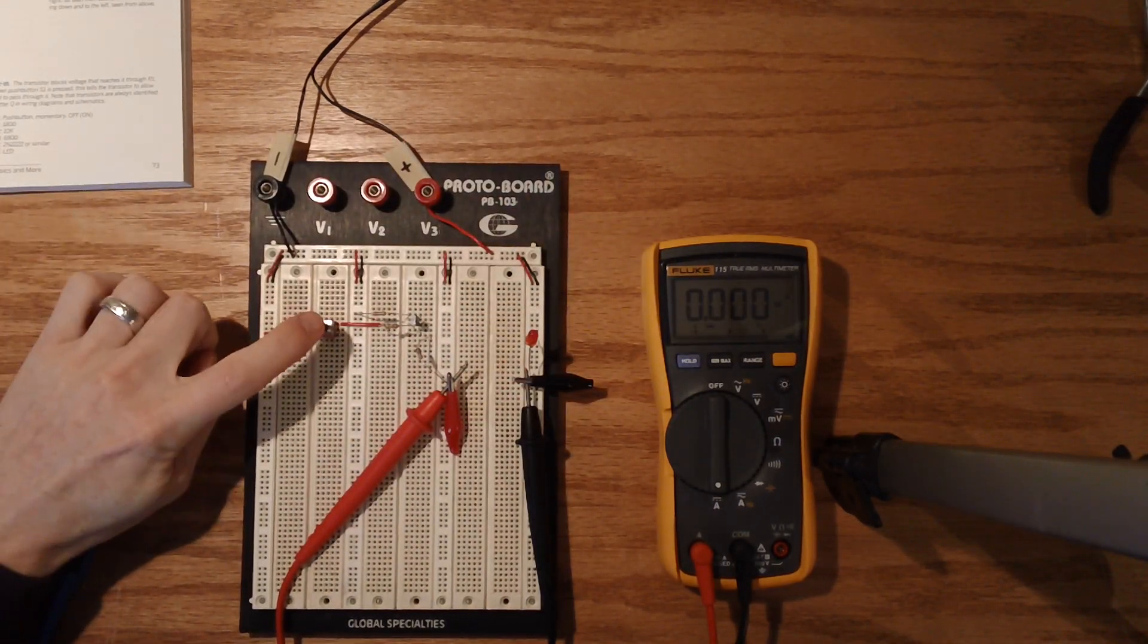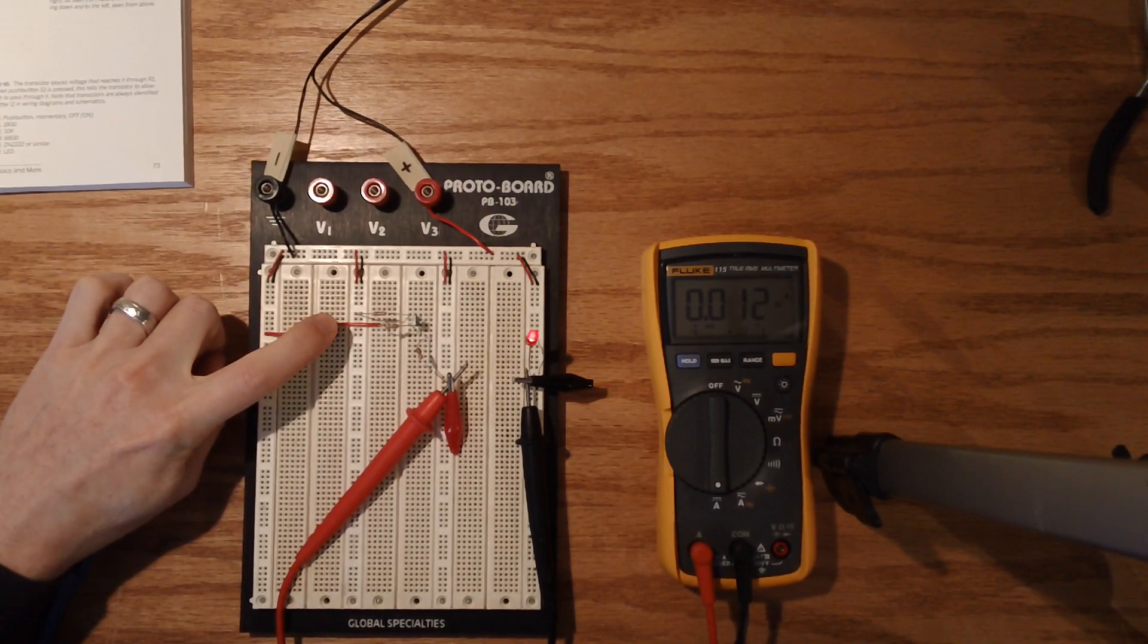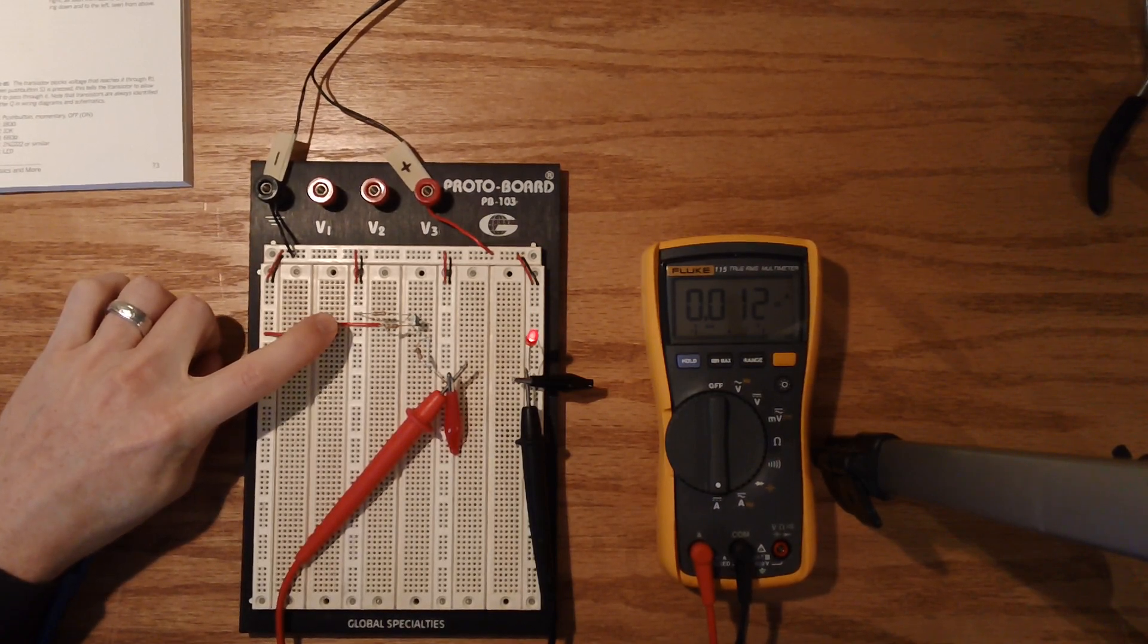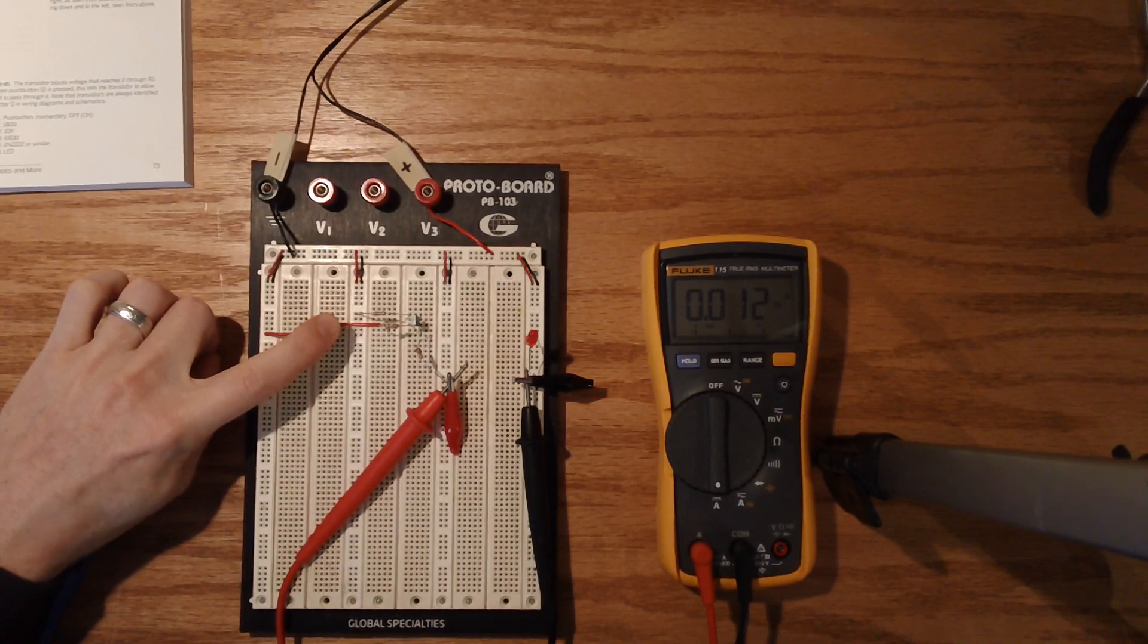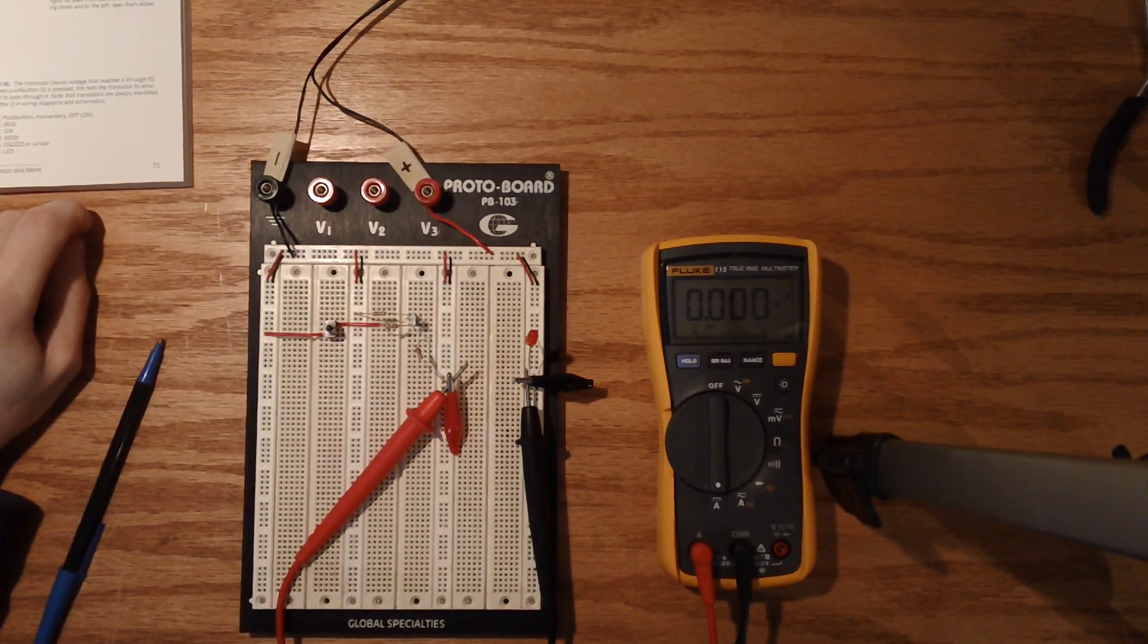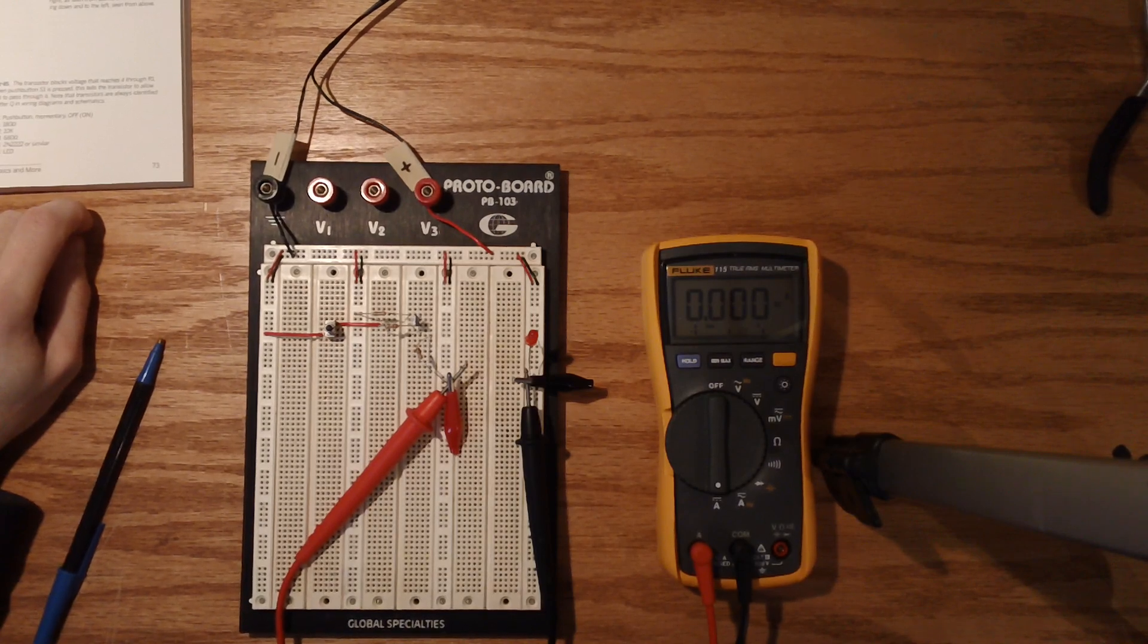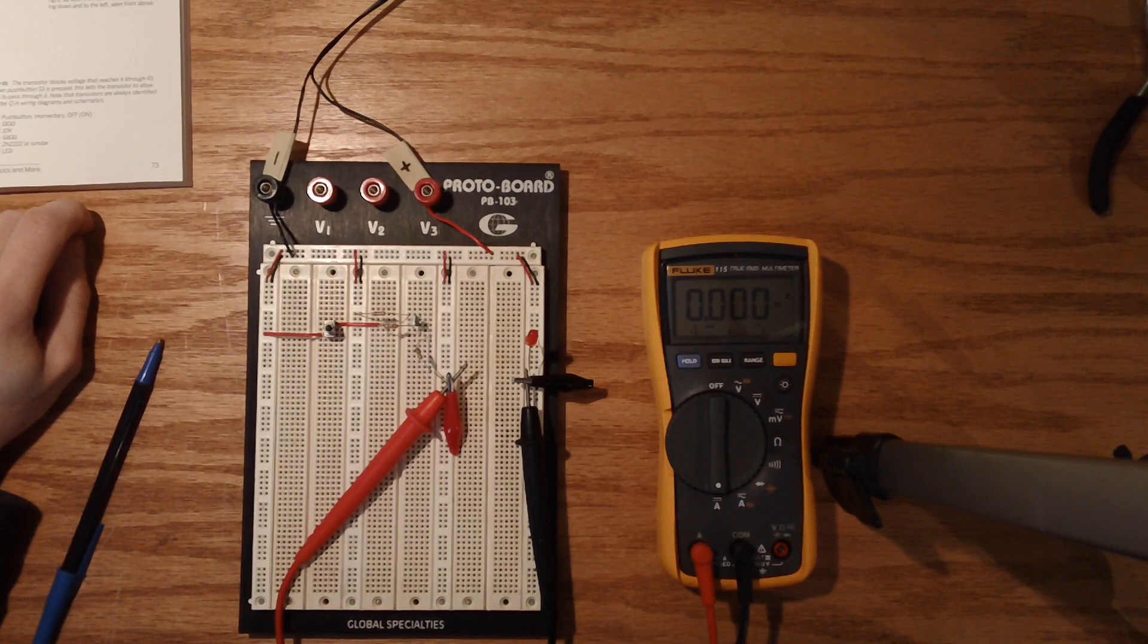So if I push this, the light is on, and it shows that we have a current flow of 12 milliamps. So based on most LEDs, you can safely put up to about 20 milliamps through the LED to get it to full brightness without causing any damage.